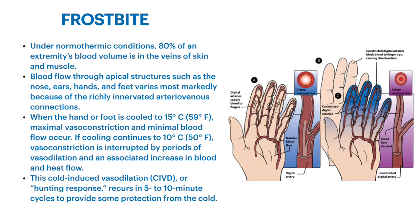When the hand or foot is cooled to 59 degrees Fahrenheit, maximal vasoconstriction and minimal blood flow occur. It really doesn't take getting very cold for that vasoconstrictive action to cause minimal blood flow in your extremities. If cooling continues down to 50 degrees Fahrenheit, vasoconstriction is interrupted by periods of vasodilation — your body's response of constricting to protect heat loss, then relaxing to let everything perfuse again. These periods of intermittent vasodilation try to keep those extremities alive.